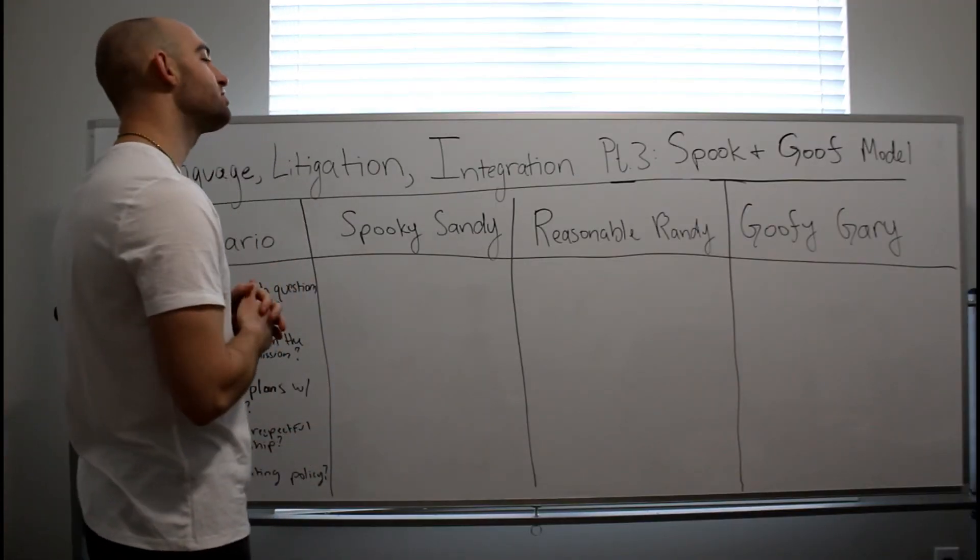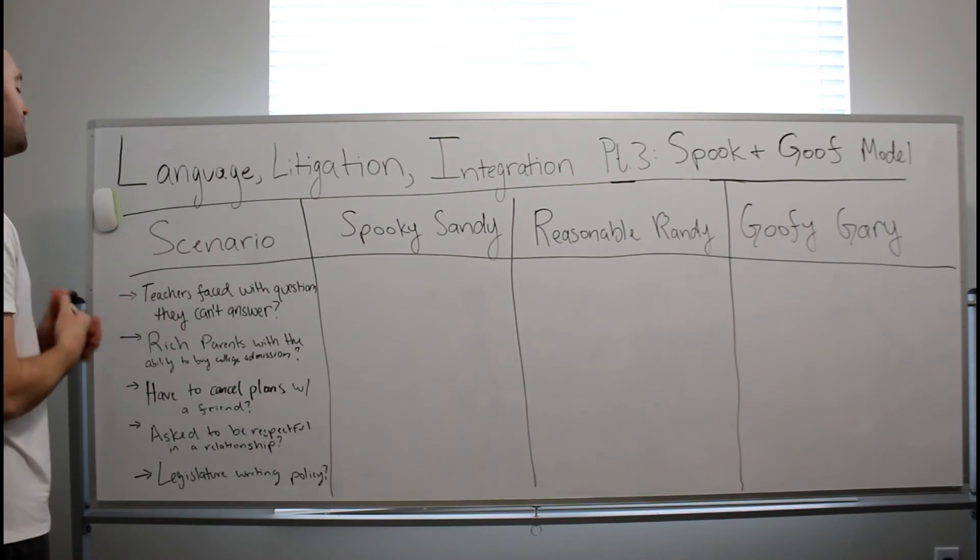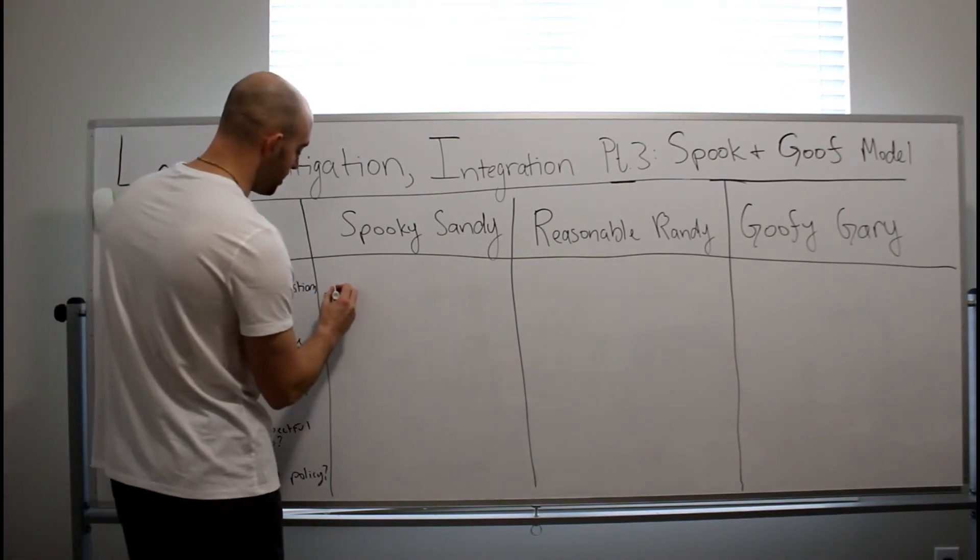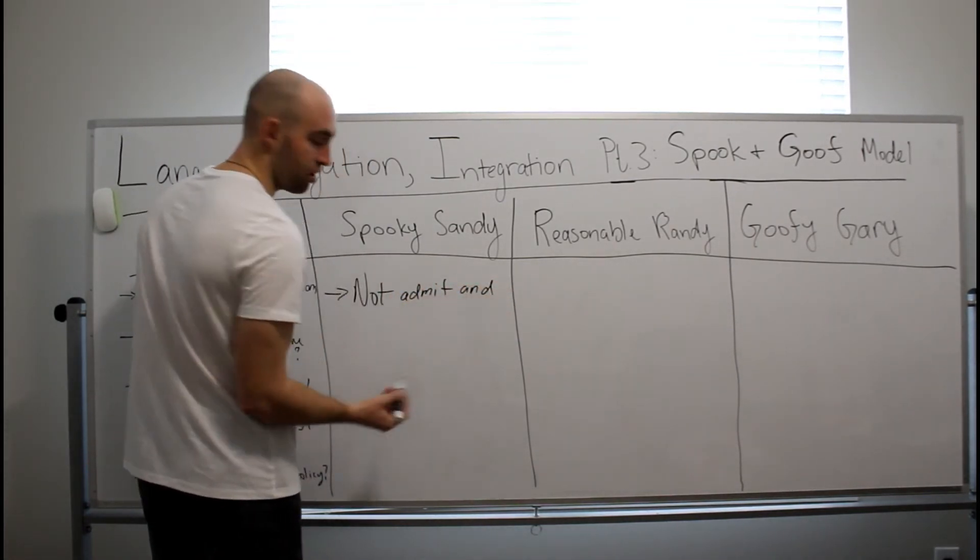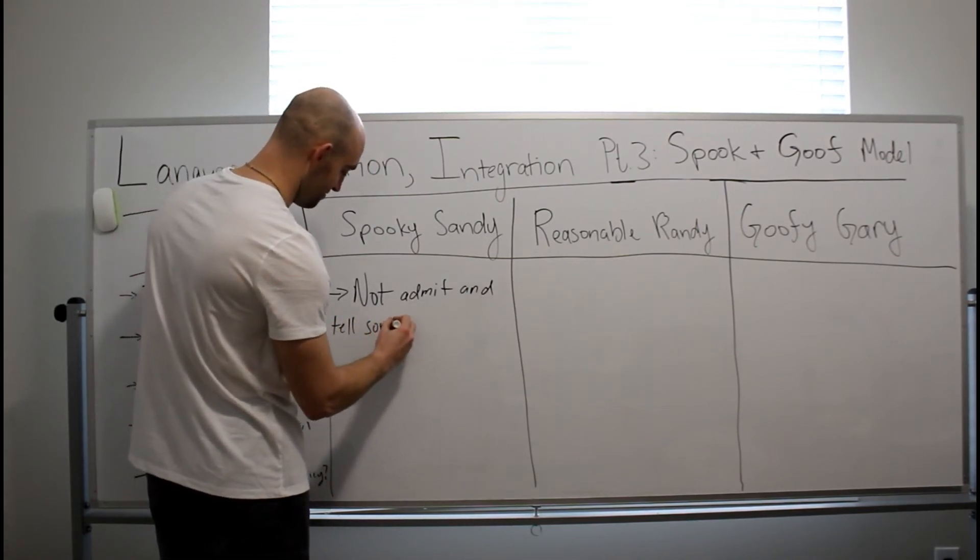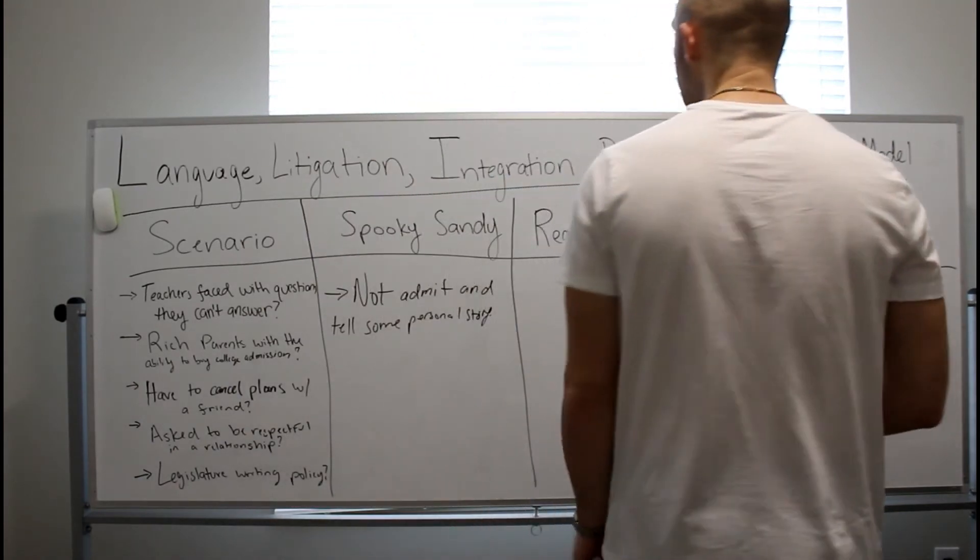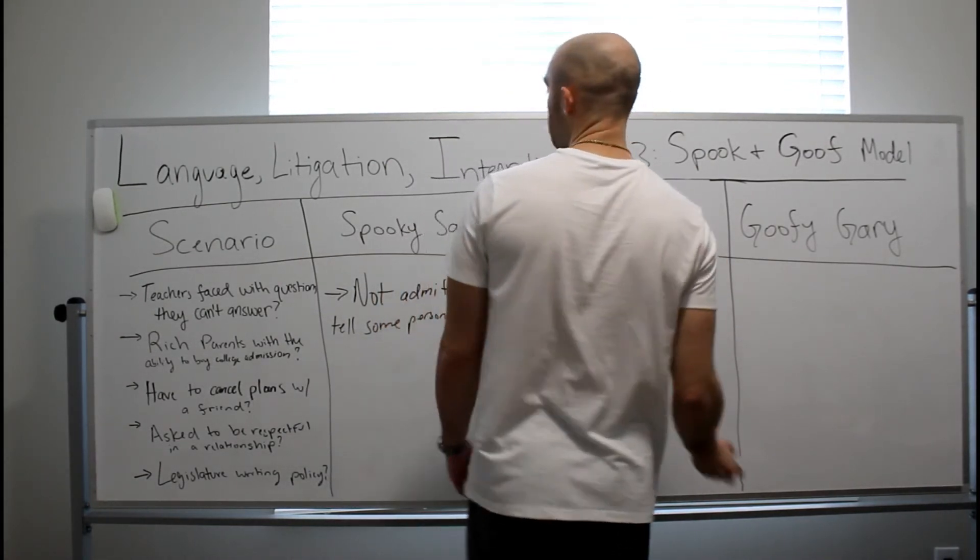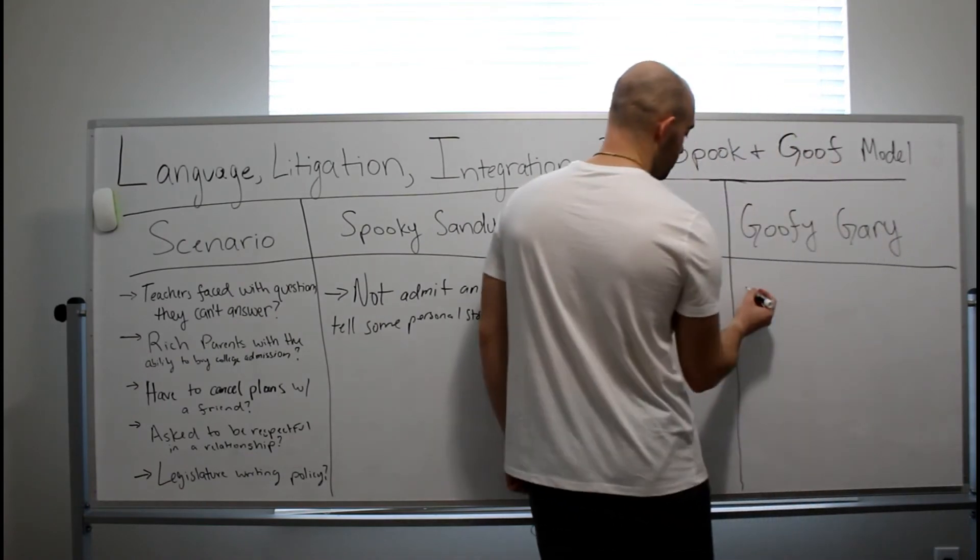So now we've set up our three characters and let's ask some scenarios and conjecture what we think these people would do in these scenarios. Let's say each of the three people were teachers faced with questions they can't answer. Spooky Sandy is really narcissistic. She hates herself. So she's got to hate her students. So she's going to not admit she doesn't know anything or doesn't know the answer. And tell some personal story no one cares about. What would Reasonable Randy do? Reasonable Randy would say, I don't know. And then help their students and direct them to a resource or someone who would know. What would Goofy Gary do? Goofy Gary would make a one-liner joke no one has to know.